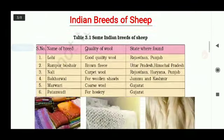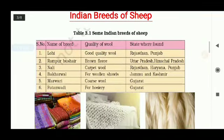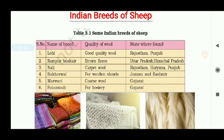Now let's move to the next topic: Indian breeds of sheep. As we know, there are various breeds of sheep in our country. Here is a table which shows the name of different breeds, the quality of wool produced by them, and the state where they are found. The first one is Lohi — the quality is good and they are found in Rajasthan and Punjab. The second is Rampur Bushair — the wool is brown in color, hence known as brown fleece, and they are found in Uttar Pradesh and Himachal Pradesh.